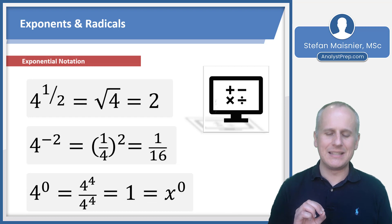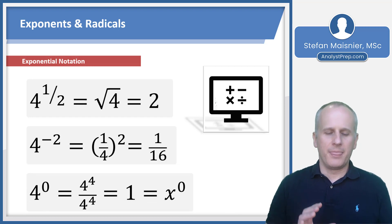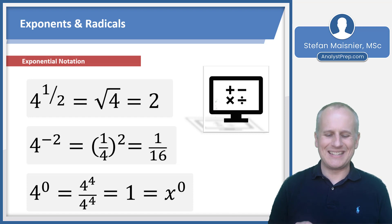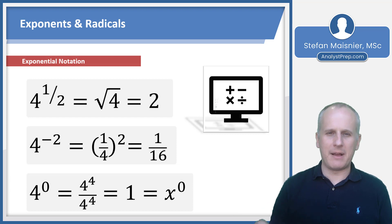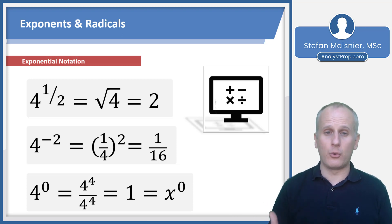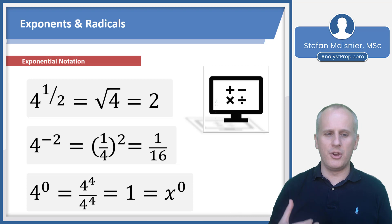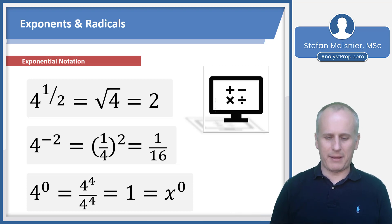There's one last unique power to consider: anything raised to the zero power. The proof is seen in the fraction: four to the fourth divided by four to the fourth equals one, meaning there are no fours left over. If you remove all factors of any value, you're left with one. So anything raised to the zero power is always one.